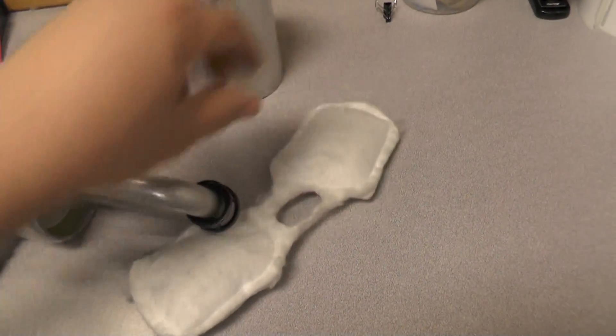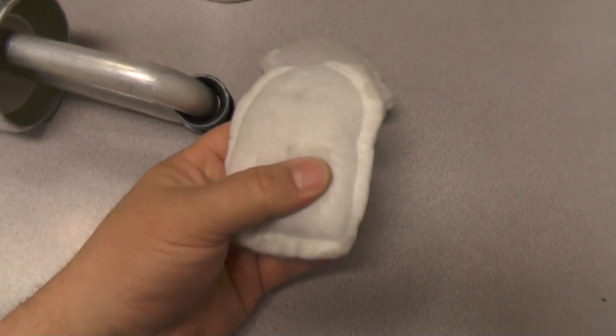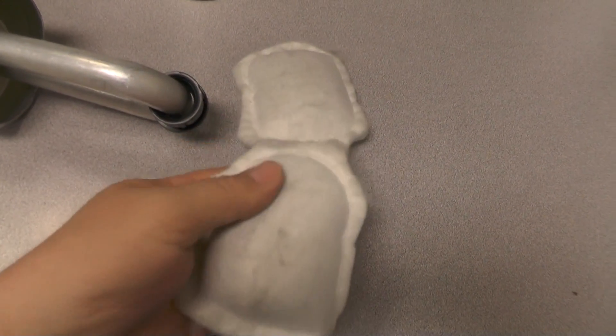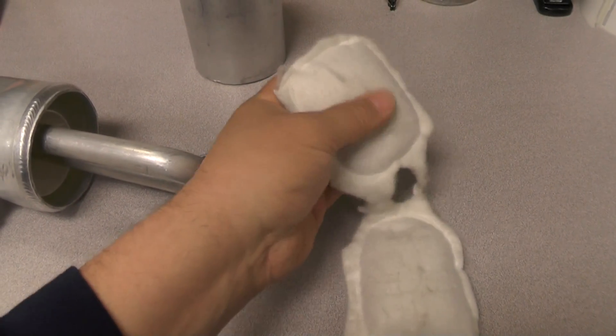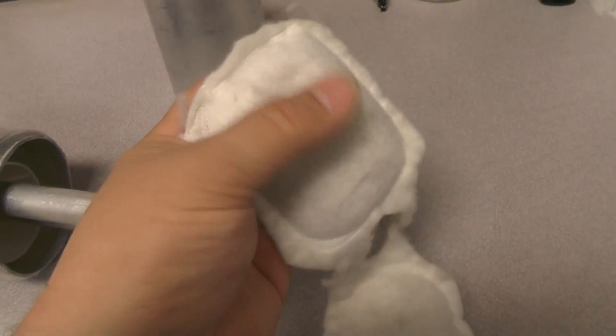This here is the desiccant bag. So inside of here is all the little beads, these little desiccant beads that absorb moisture out of the refrigerant. You can hear them, right?